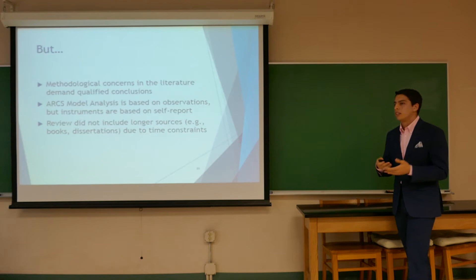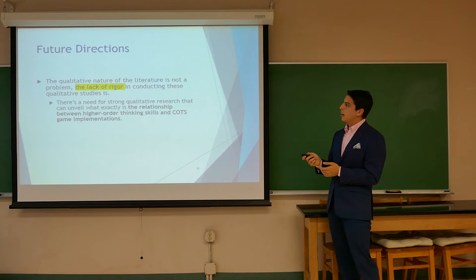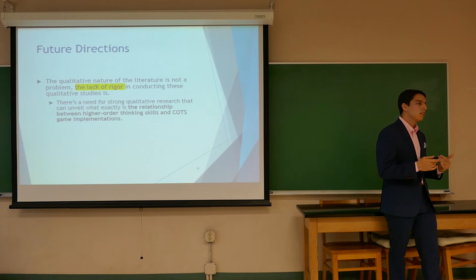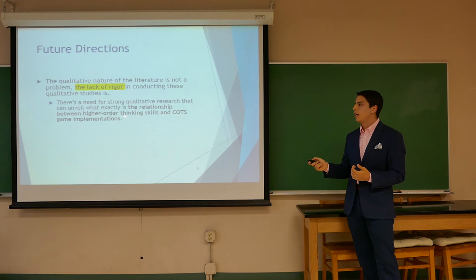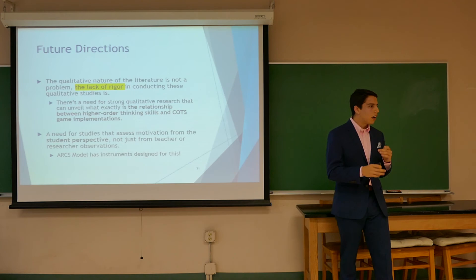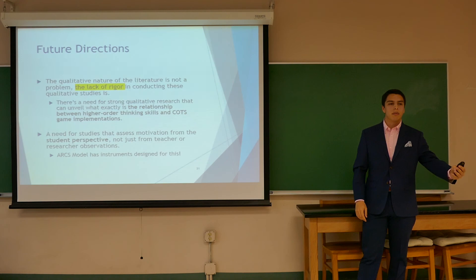For future directions: the qualitative nature of the literature is not the problem — the issue is a lack of rigor. Higher-order thinking skills are hard to measure quantitatively, so qualitative data is acceptable, but it must be collected and analyzed rigorously to support the relationships being claimed. Future research also needs to assess motivation from the student perspective through self-report, rather than relying solely on teacher observations of student motivation.